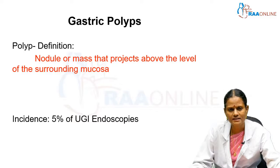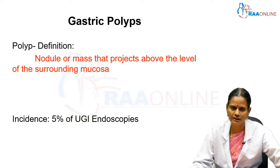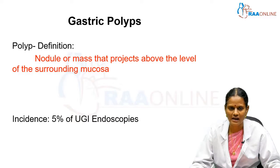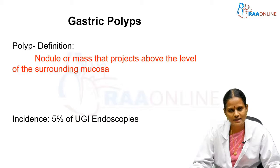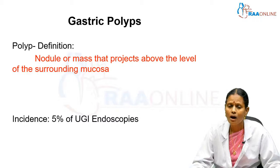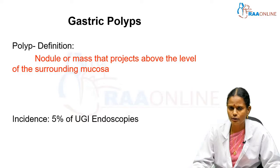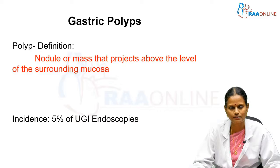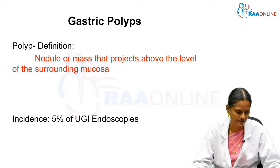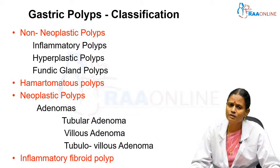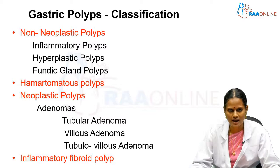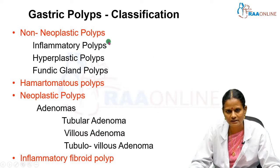What is a polyp? By definition, a polyp is defined as a nodule or mass that projects above the level of the surrounding mucosa. Of all the UGI endoscopies, the incidence of detection of gastric polyps is 5%. Classification of gastric polyps includes non-neoplastic, hamartomatous, neoplastic, and the very rare inflammatory fibroid polyp.